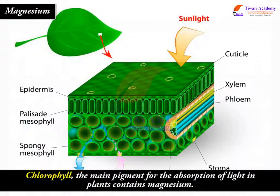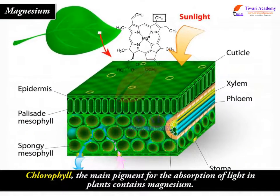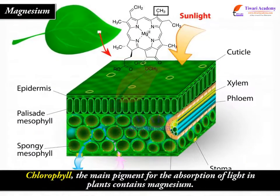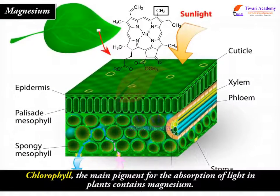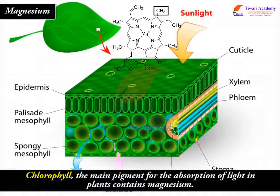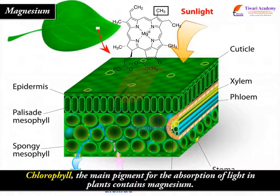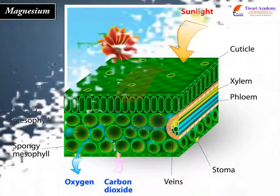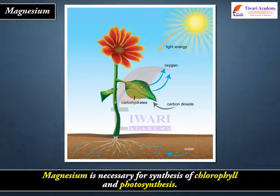Chlorophyll, the main pigment for the absorption of light in plants, contains magnesium. Magnesium is necessary for the synthesis of chlorophyll and photosynthesis.